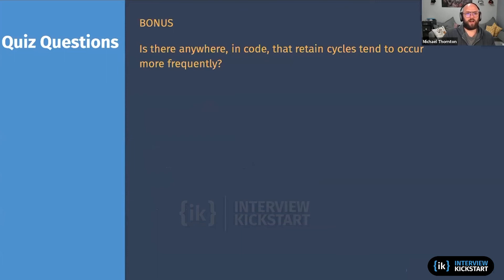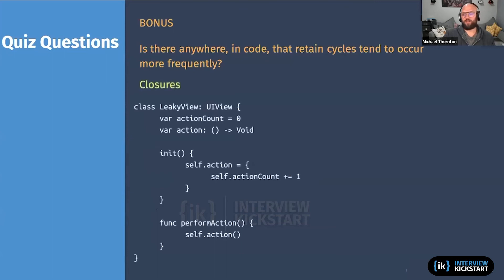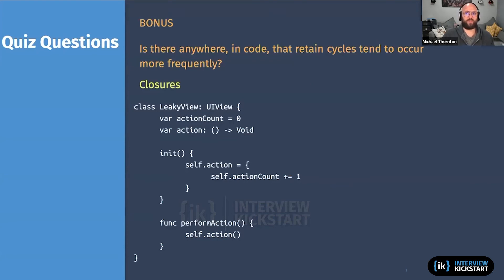The other place retain cycles tend to occur is in closures or completions. In this example, an object has a strong reference to a closure, and since we use 'self' inside the closure block, the closure then creates a strong reference back to the object itself. There are two ways to address this — can anyone name them?